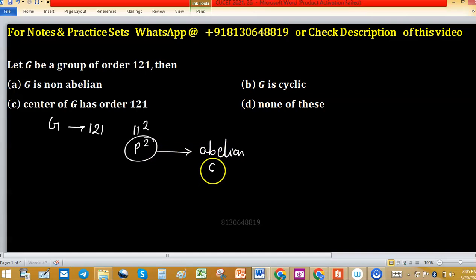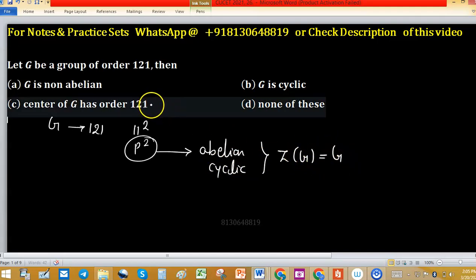If group is abelian or cyclic, then its center is always the group itself. So center is the group itself, then order of center is 121. Option C is correct.